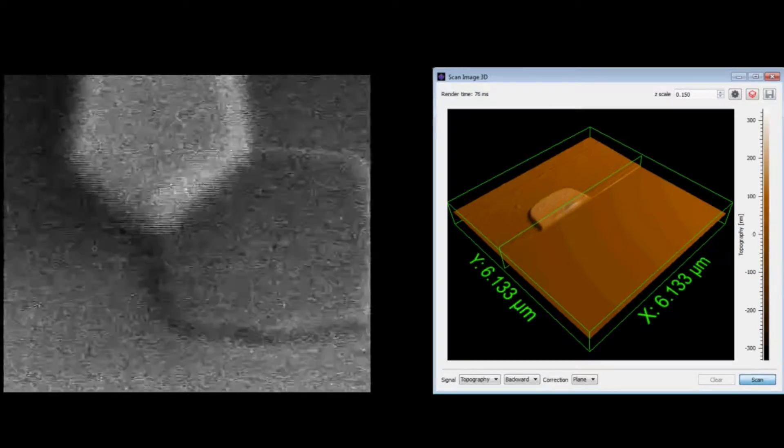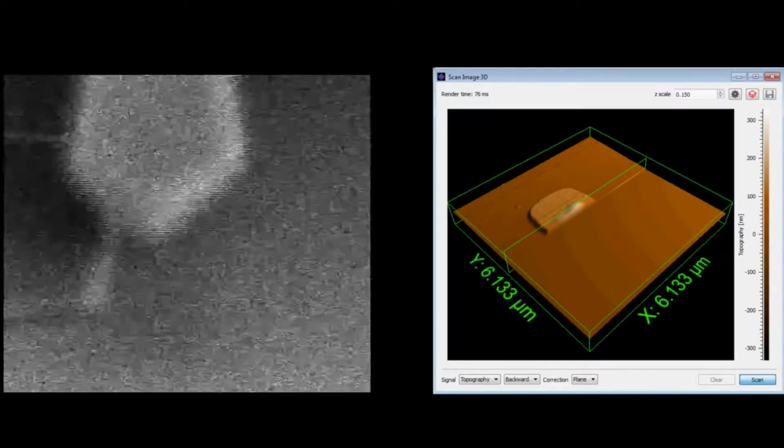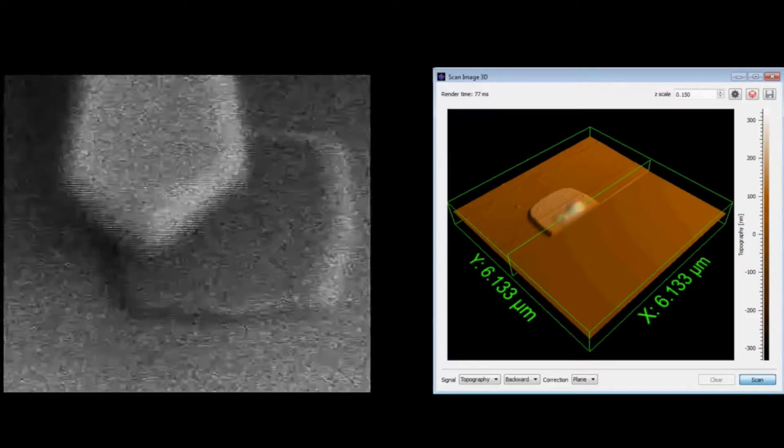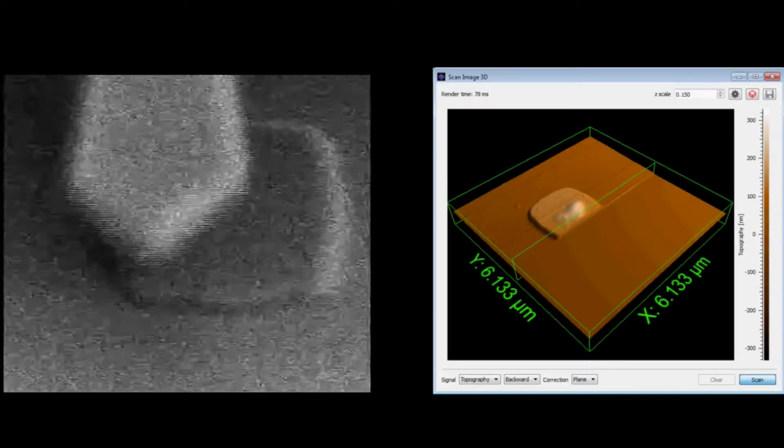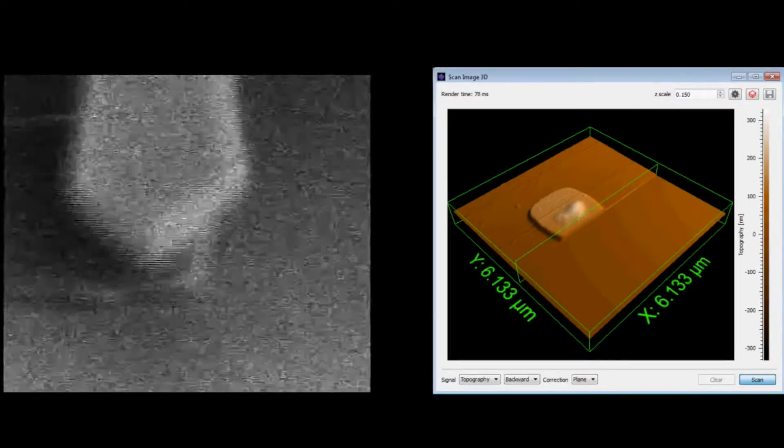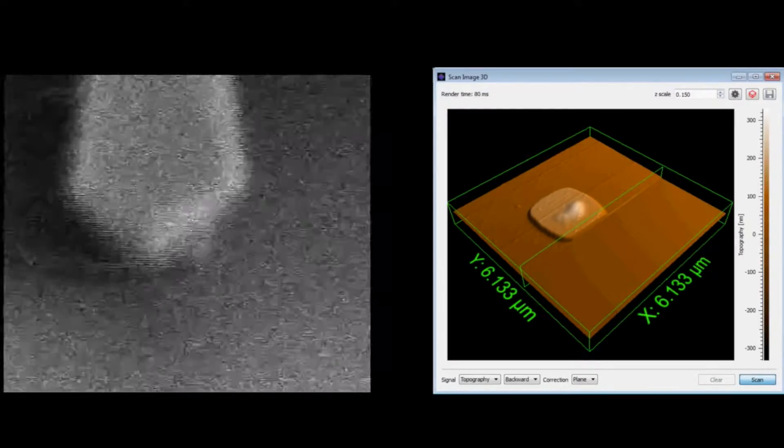After navigating to the point of interest using tip navigation we start the scan procedure. During the scan we can select a smaller area for the scanning window within the 60 by 60 micrometer range. The overlap of both images gives us exact information about the topology, the heights and the depths of the observed features.